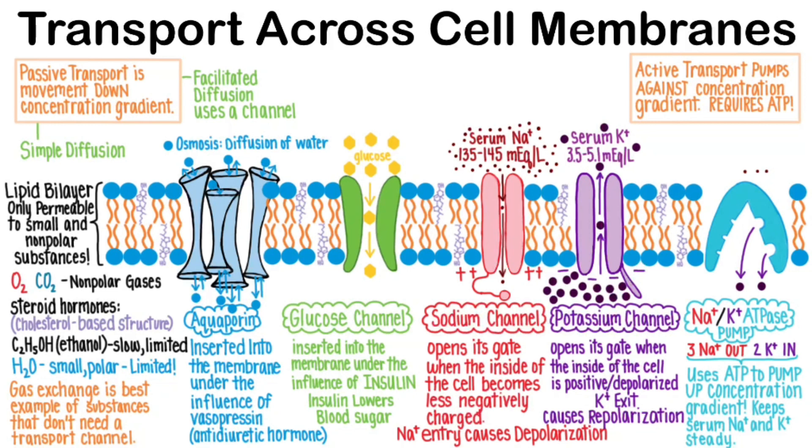Active transport can be carried out by channel pumps, like this one, but another form of active transport is a process called endocytosis. In this process, ATP energy is used to literally wrap the cell membrane around a substance it wants to bring inside. White blood cells are particularly well-known for this sort of process that we call phagocytosis.